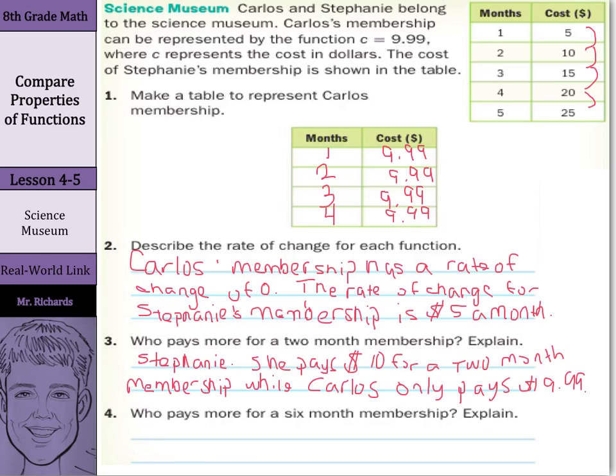Who pays more for a six-month membership? Well, once again, Stephanie. She will pay $30. And how did we get that $30? Well, if it's $5 a month, that's just 6 times 5. And then Carlos will pay, and you guessed it, $9.99. And again, notice how in Carlos' membership, there is no independent variable. So the dependent variable C doesn't change. There's no month here, compared to Stephanie's, where you can see where it's increasing by $5 a month.